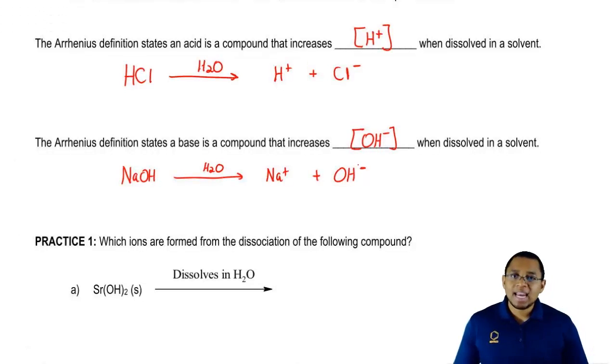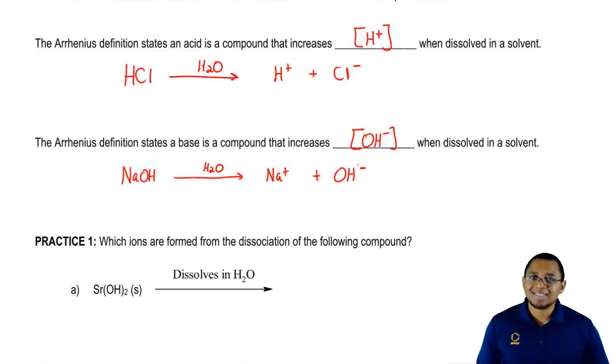If it didn't create any OH minus as a product, then it couldn't be described as an Arrhenius base. This definition is the broadest of the three definitions we're going to see. It was the earliest one developed, that's why it's so broad. It's basically any compound with H positive or OH minus. We'll learn more definitions that are more precise to exactly what acids and bases are.